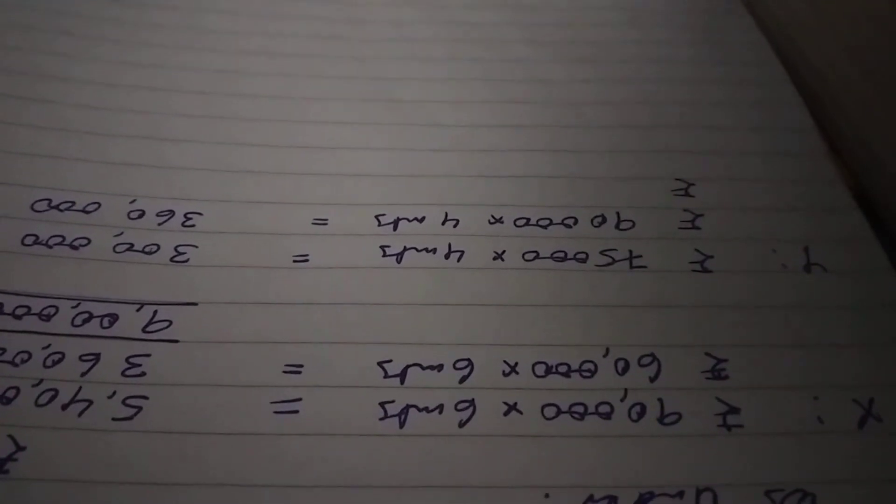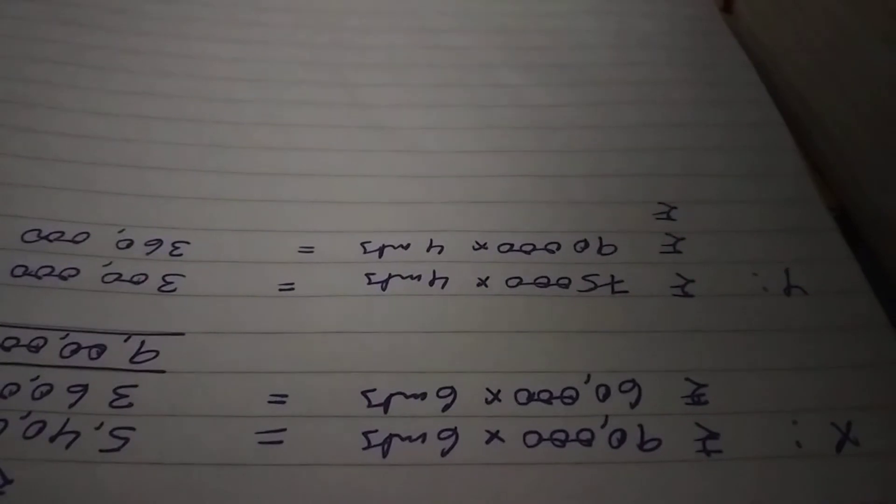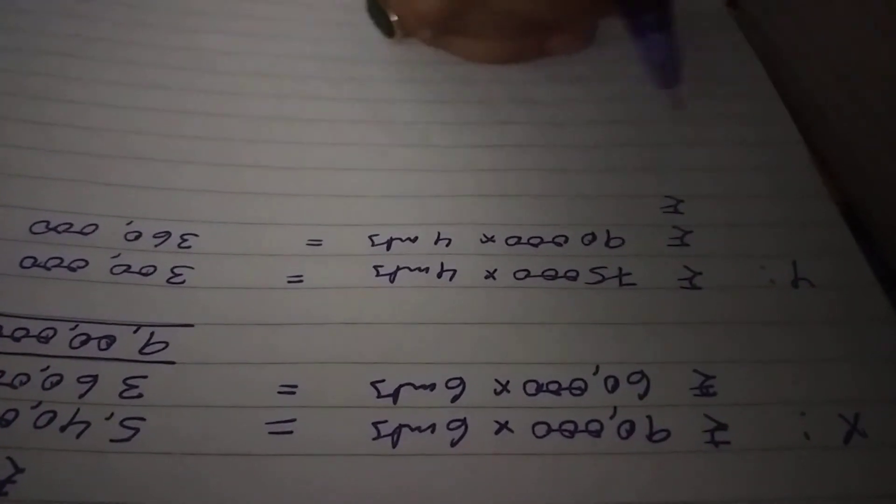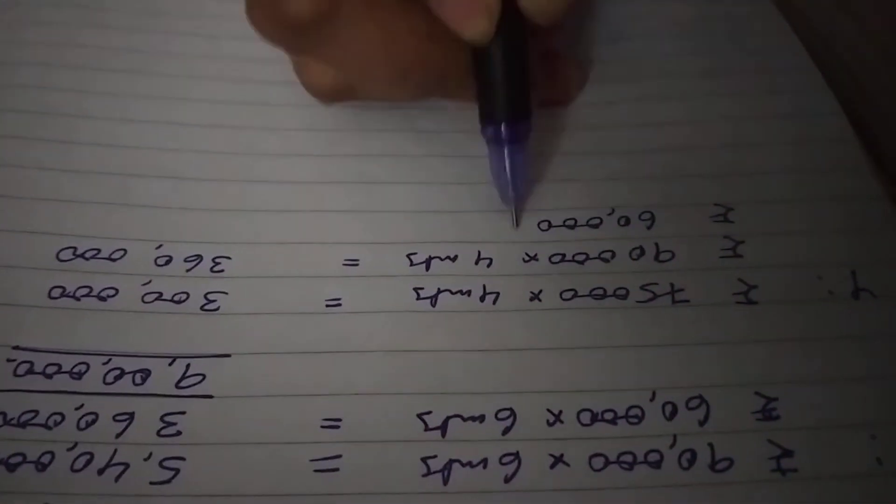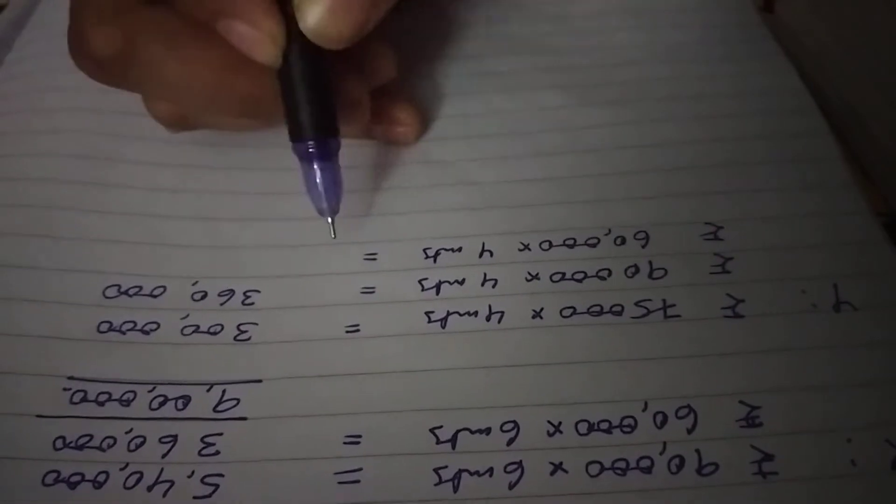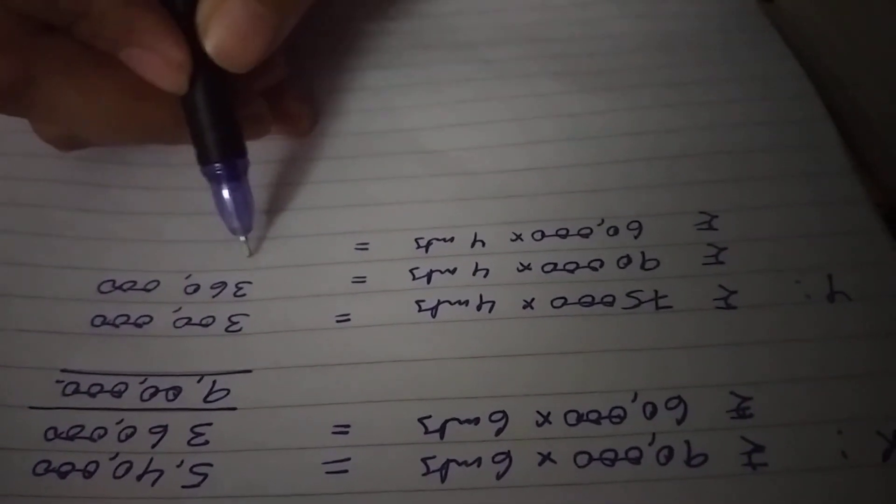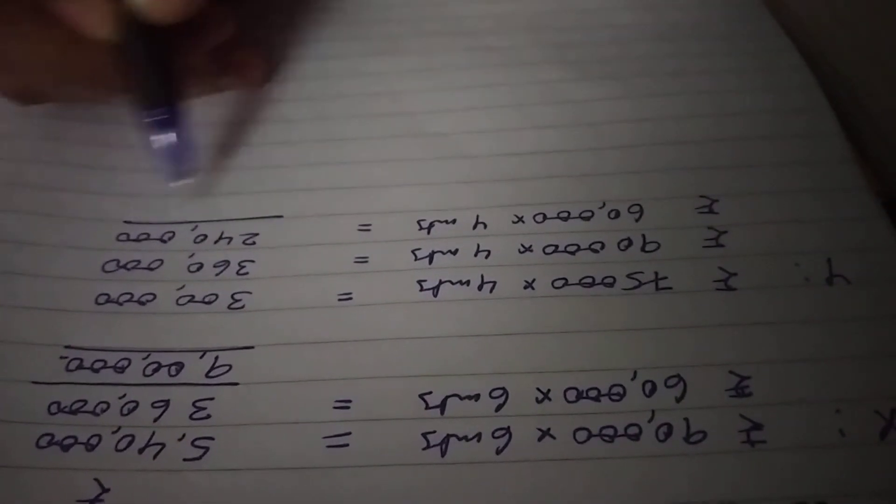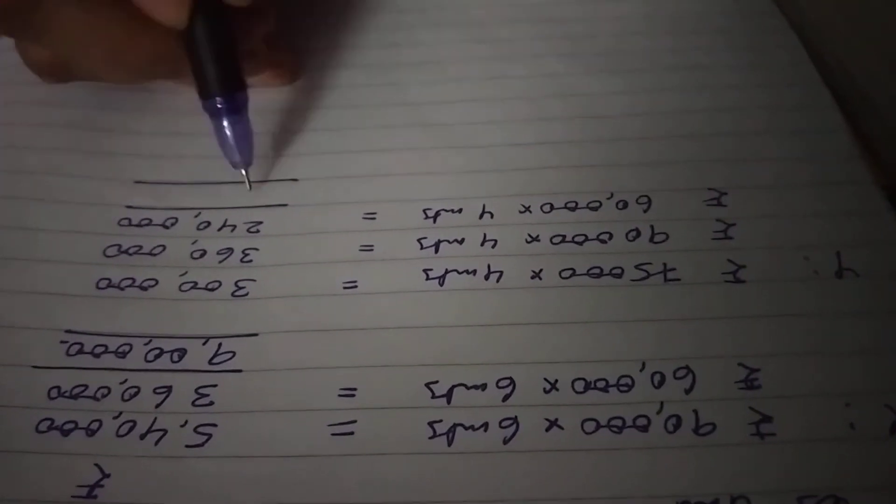At the end of 4 months but withdraws rupees 30,000 at the end of 8 months, that means 90,000 minus 30,000 equals 60,000 for 4 months. So 6 times 4 is 24, 2 lakh 40,000. Total will be 9 lakh.